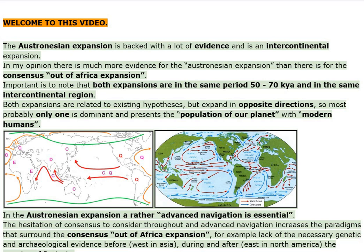Welcome to this video. The Austronesian expansion is backed with a lot of evidence and is an intercontinental expansion. In my opinion, there is much more evidence for the Austronesian expansion than there is for the Consensus Out of Africa expansion. Importantly, both expansions are in the same period — 50 to 70 KYA — and in the same intercontinental region.